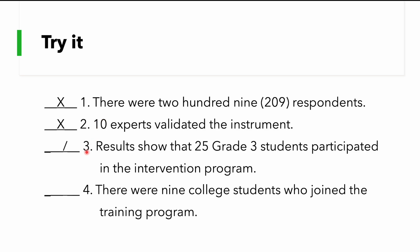Number three, it's a check because number 25 should be written as 25 numeral and grade 3, 3 should be written as 3. Number four, what's your answer? It's a check also because we write here or we have here 9 as a word and not as a numeral.